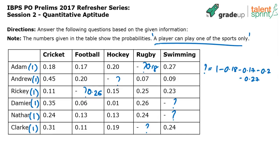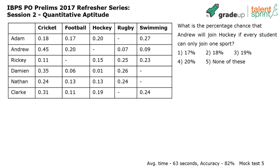Before solving the questions, it's important to understand what can be extracted from the data. The first question asks: what is the percentage chance that Andrew will join hockey if every student can join only one sport? Percentage chance is just probability expressed as a percentage. This is straightforward — 0.19 is simply 19 percent.